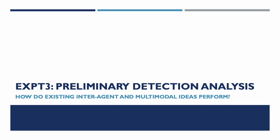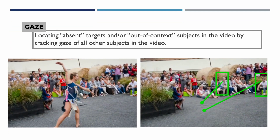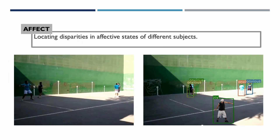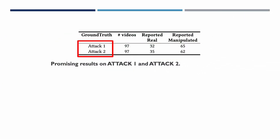Finally, we perform some interesting experiments showing how problem statements beyond standard vision tags can be used for detection. The first idea is to locate absent or out-of-context subjects in the video by tracking the gaze of all subjects, and use these inferences to flag a video as manipulated. The second idea is to locate disparities in affective states of different subjects to flag videos for potential manipulation — for instance, the addition of a dancer caused the affective state of joy to stand out from the other players. Quantitative analysis of these methods, presented in the paper, shows there is potential to use such ideas for detecting more manipulations.